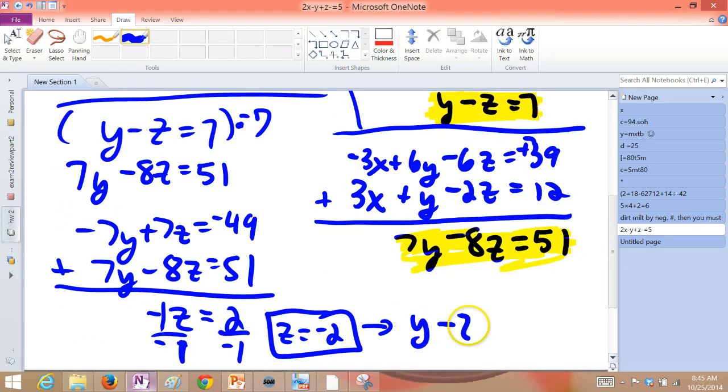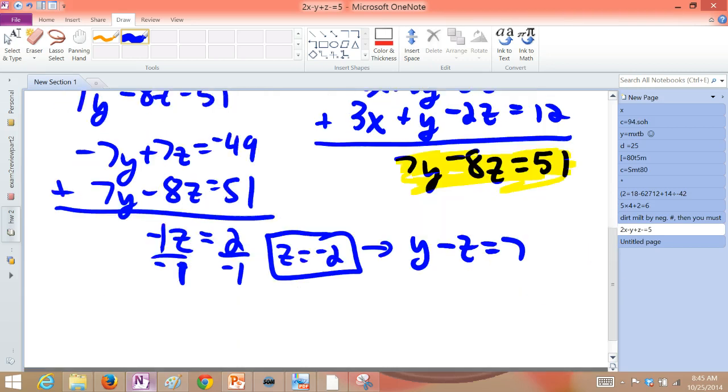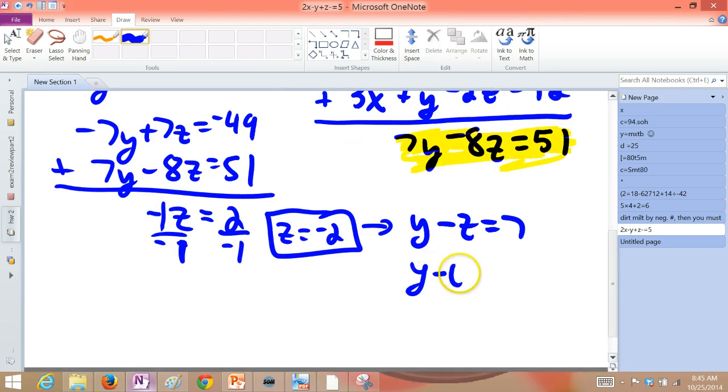You take this back into either of these two equations that you've had found. Let's go with y minus z is 7. It seems easiest. Plug a negative 2 into that. Be careful, though. The z is negative 2, so you're minusing a negative 2.